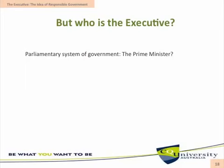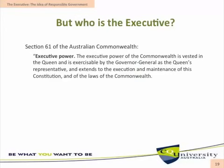However, if we look at Section 61 of the Australian Constitution, it provides that the executive power of the Commonwealth is vested in the Queen and is exercisable by the Governor-General as the Queen's representative, and extends to the execution and maintenance of the Constitution and the laws of the Commonwealth. In fact, nowhere does the Constitution mention or identify the Prime Minister, and neither does the Constitution clearly define who wields executive power. Does this mean it is actually the Governor-General, as the Queen's representative, who wields executive power?